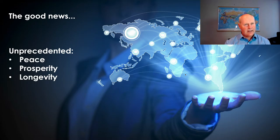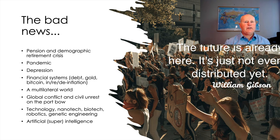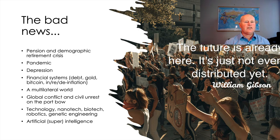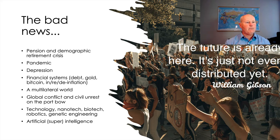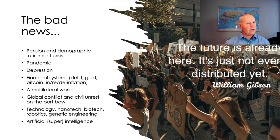But with all this peace, prosperity and longevity has come some bad news. We are facing a major pension and demographic retirement crisis as baby boomers retire. We're also in the middle of the worst pandemic we've seen in a hundred years, and possibly looking at the worst depression in a hundred years, possibly even eclipsing the 1929 depression. We're looking at a whole range of financial systems which are in a state of flux. And when you see depression and economic problems, you also see civil unrest, warfare, and a whole range of issues — and we're seeing that already.